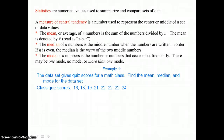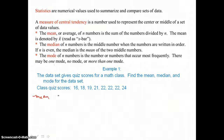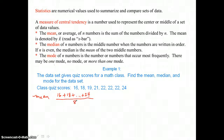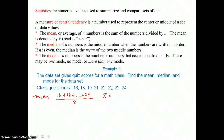In example 1, the data set gives quiz scores for a math class. Find the mean, median, and mode for the data set. The mean or average of n numbers is the sum of the numbers divided by n. So all we have to do to find the mean is add up the scores — 16 plus 18, all the way out to 24 — and divide that sum by the number of quiz scores, which is 8. So x-bar equals 20.5.